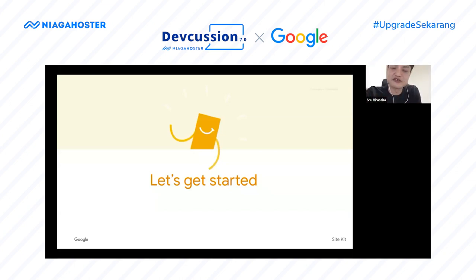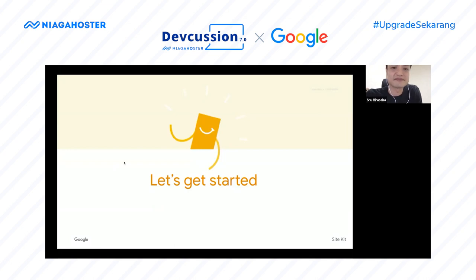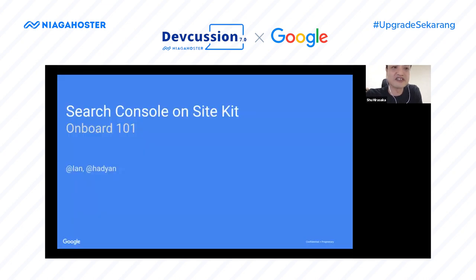I also talked about Site Kit, which is Google's official WordPress plugin to quickly and easily get a summary of your various site data — such as SEO analytics, performance, and monetization. That was my presentation. Thank you for listening. With that, I'll hand it over to my colleague Ian for a more detailed technical deep dive.